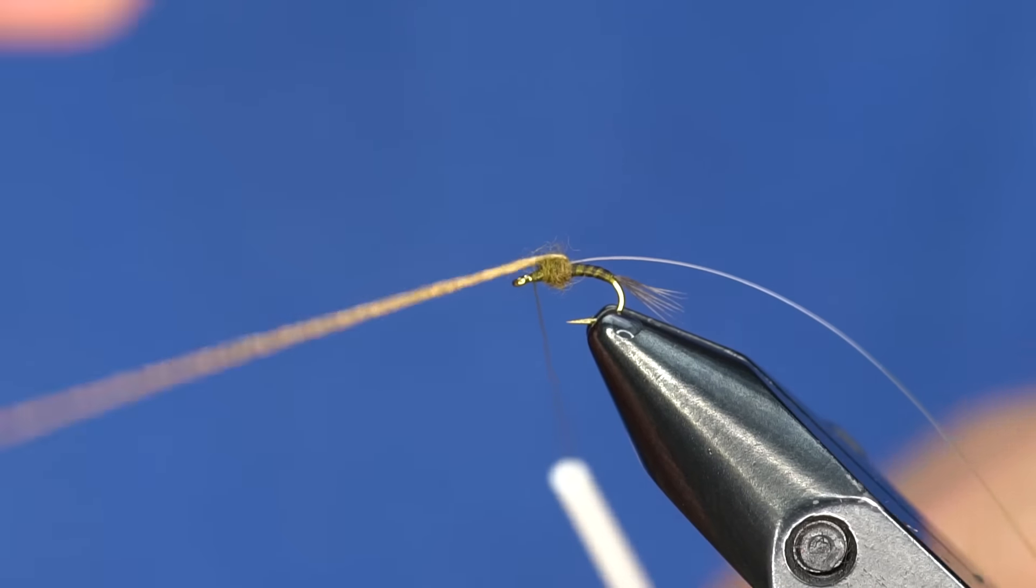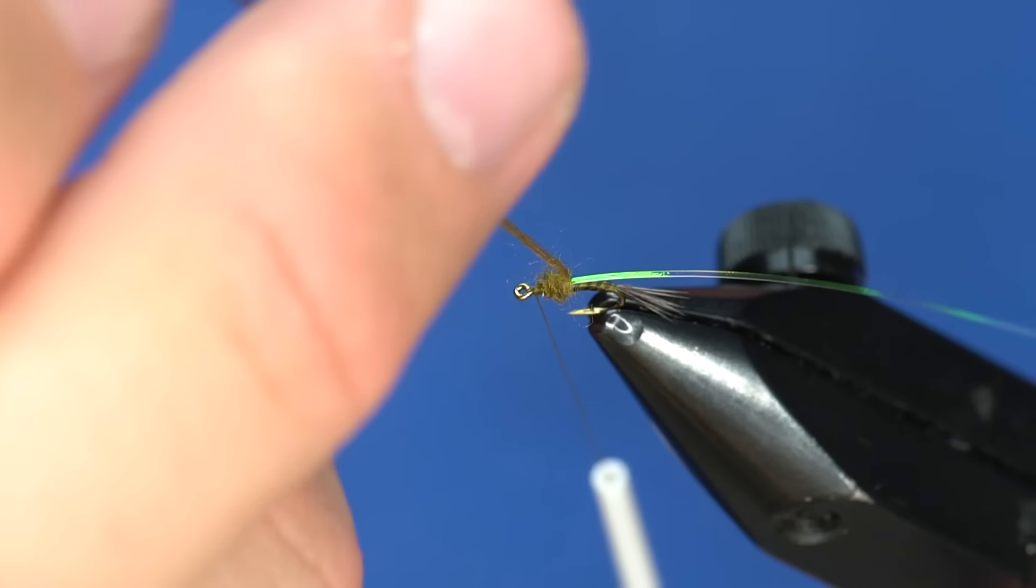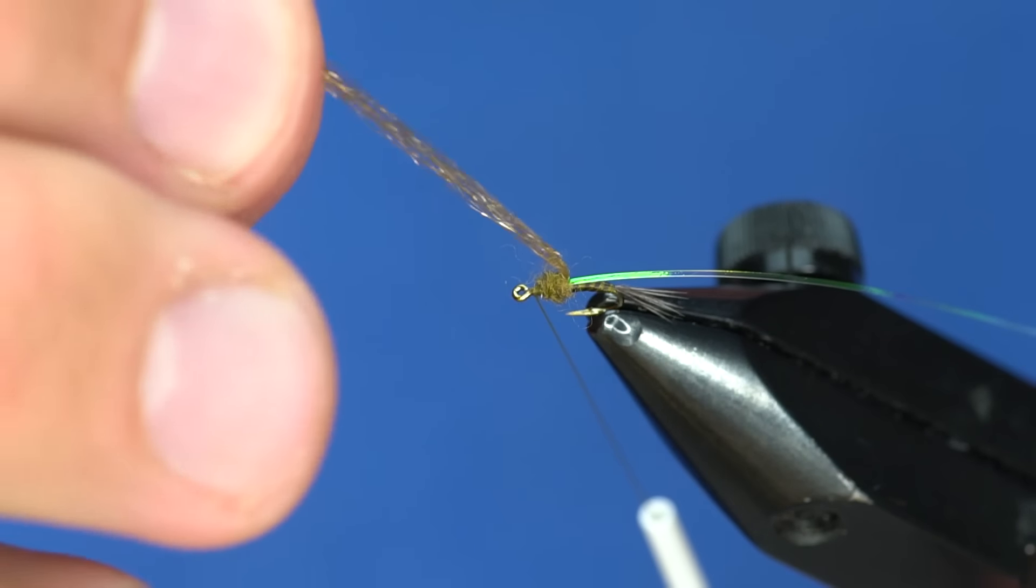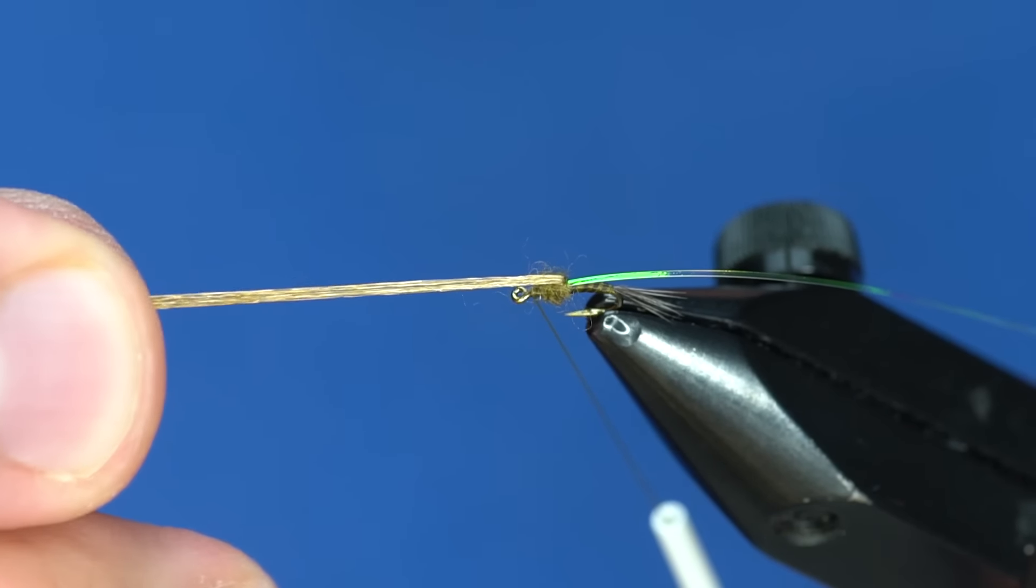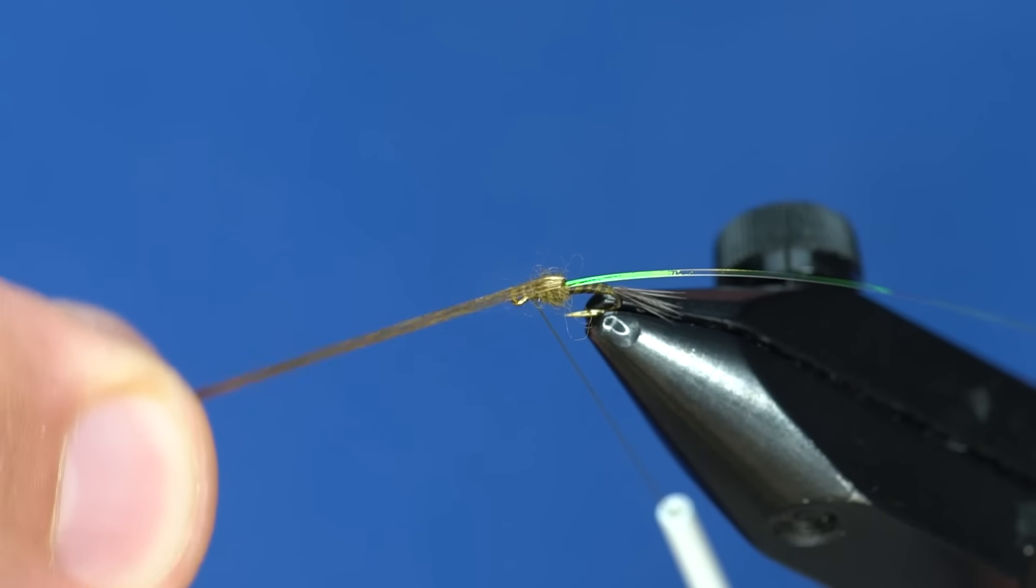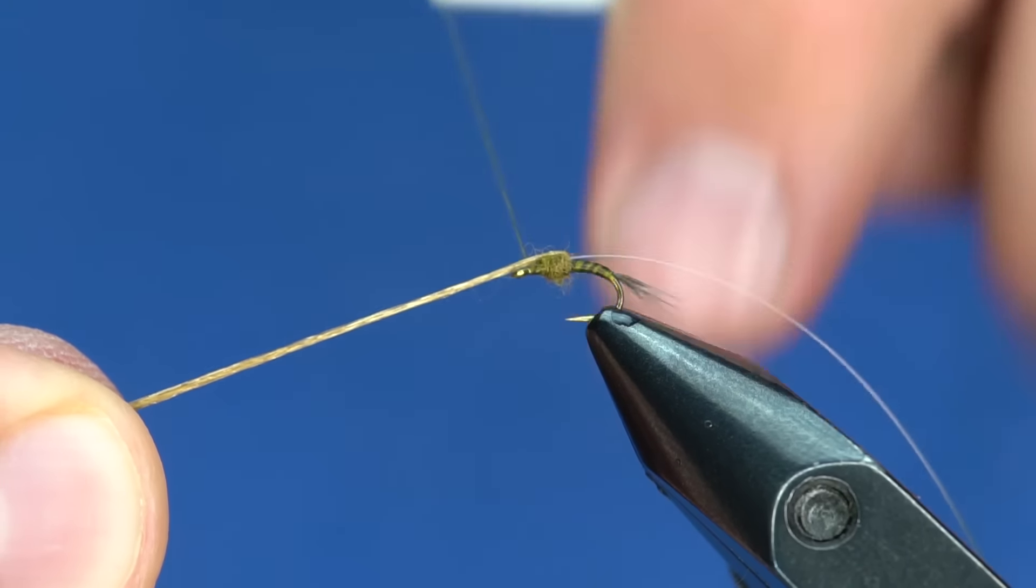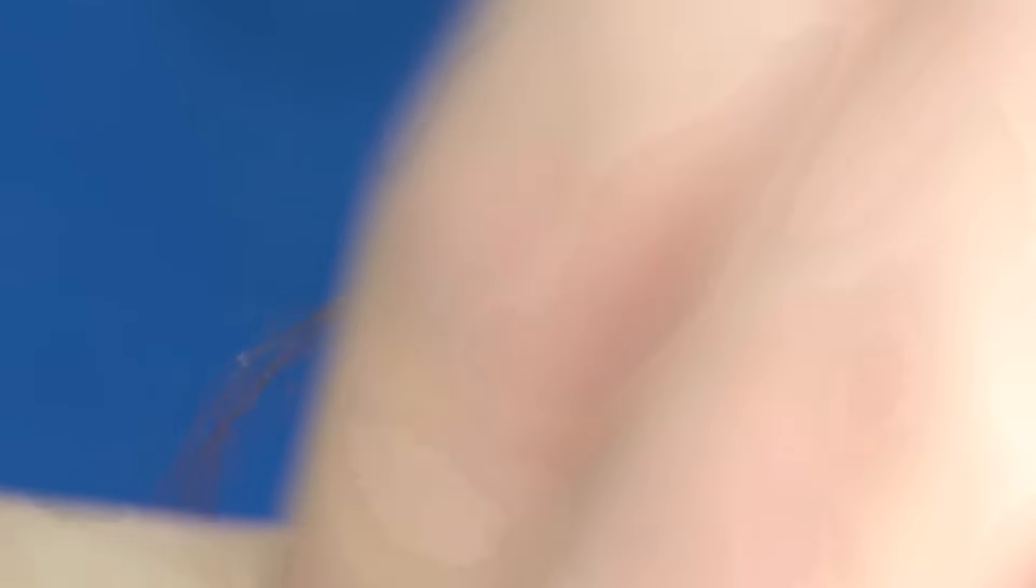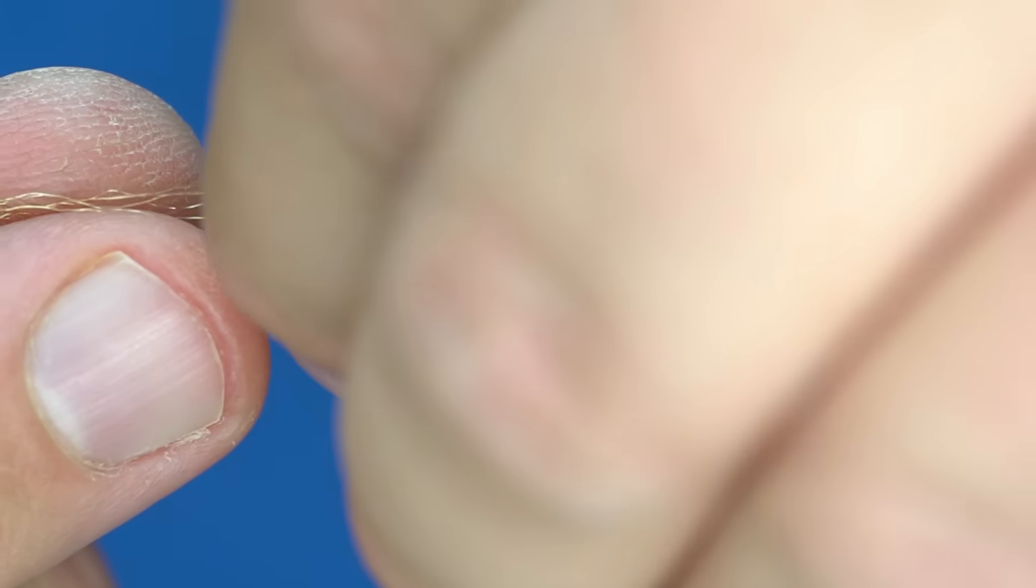Now we're going to pull over those fibers. I'll kind of show you how to get it to spread over the thorax. I'm just going to pull it over and kind of wiggle it back and forth. That will flatten it out. Just with two wraps, I'm going to secure that and split those fibers in half.